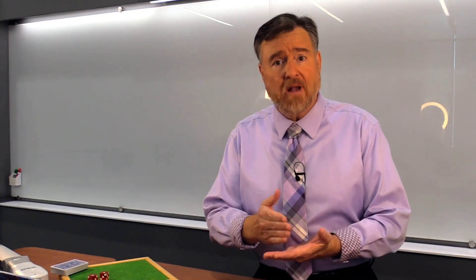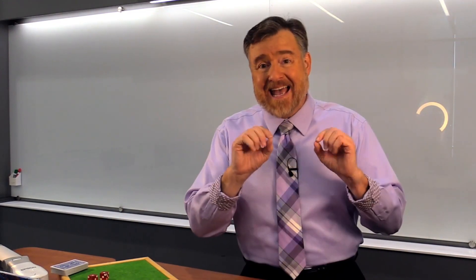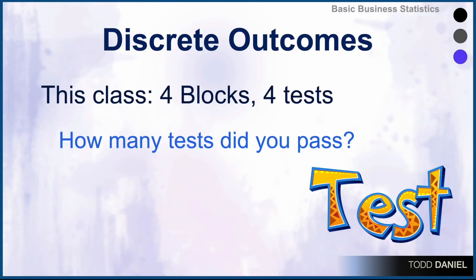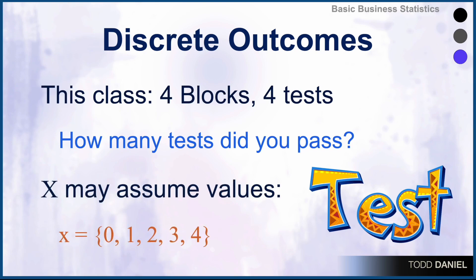Let's use an example of a statistical experiment. In fact, we'll use an example from this class. In a 16-week course, we have divided the course into four blocks each of four weeks. Each four-week block ends with a unit test. Therefore, I could ask you, how many tests did you pass? The answer would be zero, one, two, three, or four, giving us a total of five potential outcomes. And this is true for every student in the course.